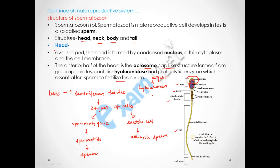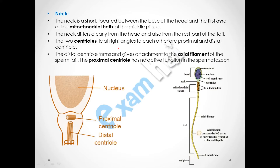The second part is the neck. The neck is short and is located between the base of the head and the first coil of the mitochondrial helix of the middle piece. As you can see in this diagram, the neck is easily distinguished because it is situated between the base of the head and the first coil of the mitochondrial helix. It has two centrioles at right angles to each other: the proximal centriole and the distal centriole.